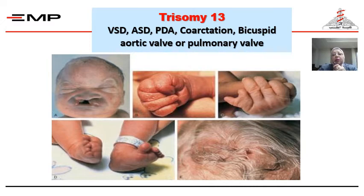Trisomy 13 is another trisomy that is compatible with life, but they don't live long. They die within the first few months of life or by the first year. They have VSDs, ASDs, PDA, coarctation, bicuspid aortic valve, or pulmonary valve abnormalities.